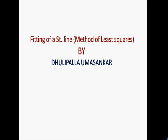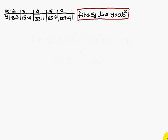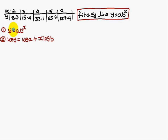Today we are going to discuss fitting of a straight line using the method of least squares. If you come across a problem where you have to fit a curve of the form y = a·bˣ, you need to find the values of a and b. The problem will be given with x values and their corresponding y values, and the line is y = a·bˣ.